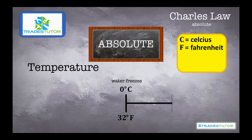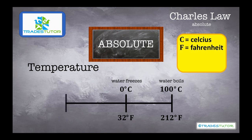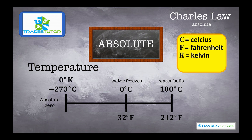Now, go up and say, where does water boil? That's 100 degrees Celsius and 212 degrees Fahrenheit. Now for absolutes, we're going to go in the other direction. We're going to get to a point of negative 273 degrees Celsius. This is called absolute zero. This is the point where there is no molecular movement, and this is where the absolute scale comes in. On the Celsius side, we call this Kelvin.